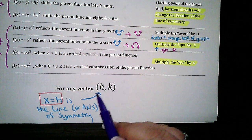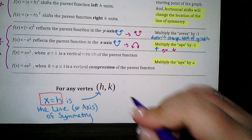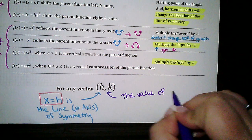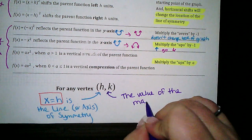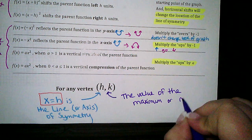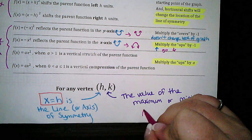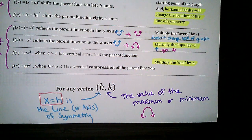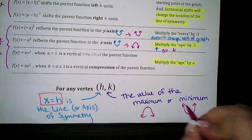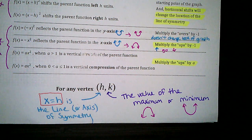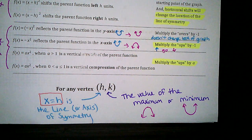The x value has a purpose, and so does the y value. The y value is the value of the maximum or minimum. A parabola is either going to have a maximum or a minimum. It has a maximum when it has a reflection over the x-axis, and a minimum when it does not. The vertex is the top of a downward parabola or the bottom of an upward one, and the y value is the value of that max or min.